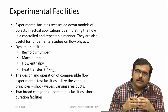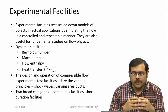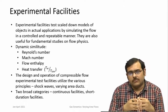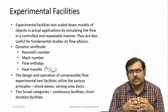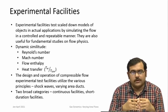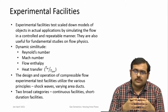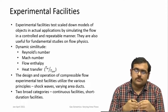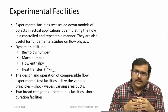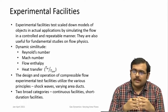This is done by a Buckingham pi analysis that would have been covered in fluid dynamics classes. We talk about various non-dimensional numbers: Reynolds number and Mach number. In compressible flows, both Reynolds number and Mach number are important — we should be achieving the same Reynolds number and Mach number. Besides that, there are other issues like flow enthalpy.